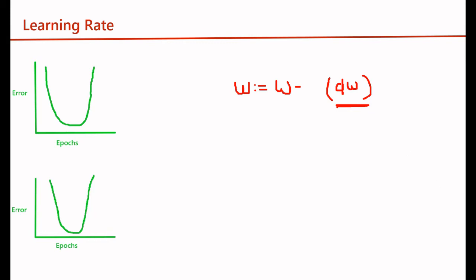We are going to decide that with the help of alpha. This alpha is called the learning rate. Alpha takes values from 0 to 1.